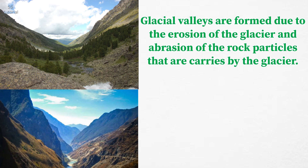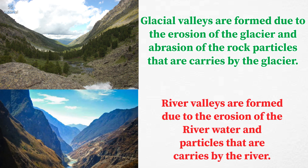Glacial valleys are formed due to the erosion of the glacier and the abrasion of the rock particles that are carried by the glacier, whereas river valleys are formed due to the erosion of the river.